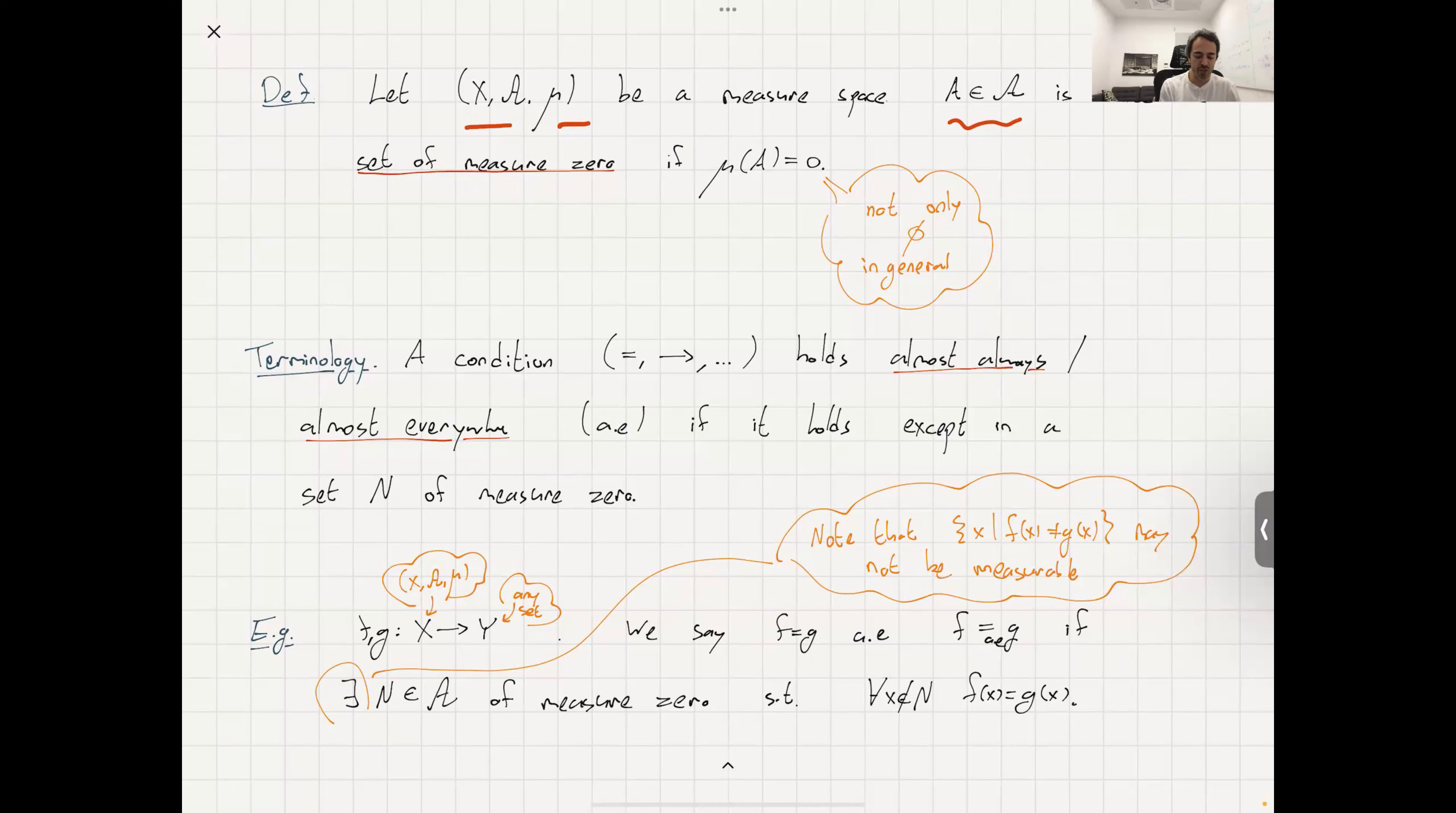Say you have two functions, F and G, and they are from X to Y. Y could be any set - I don't need structure on Y, but I need X to be a measure space.